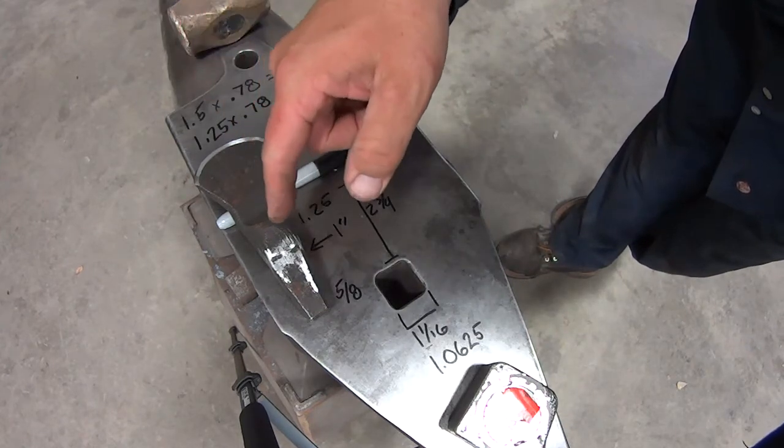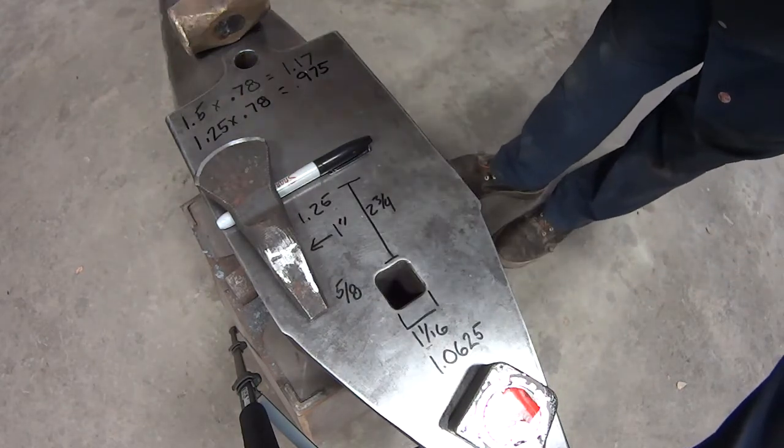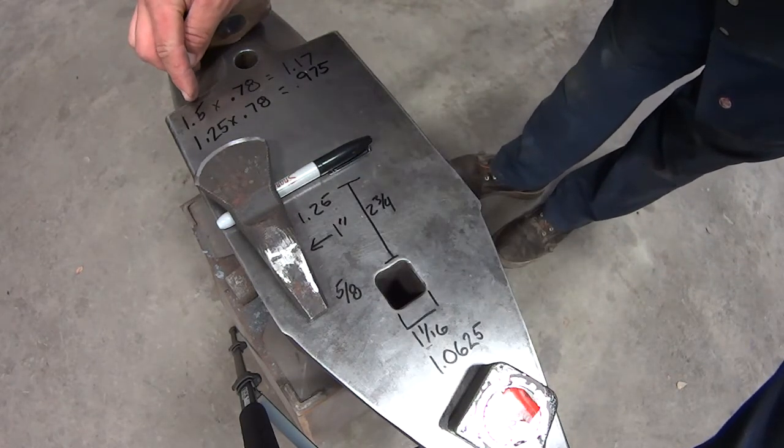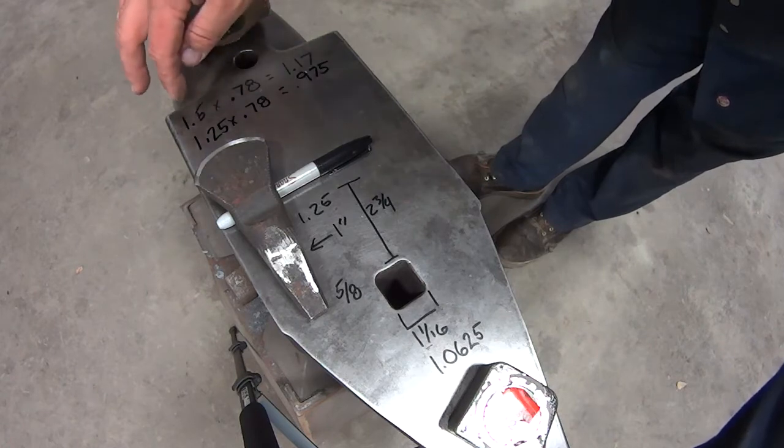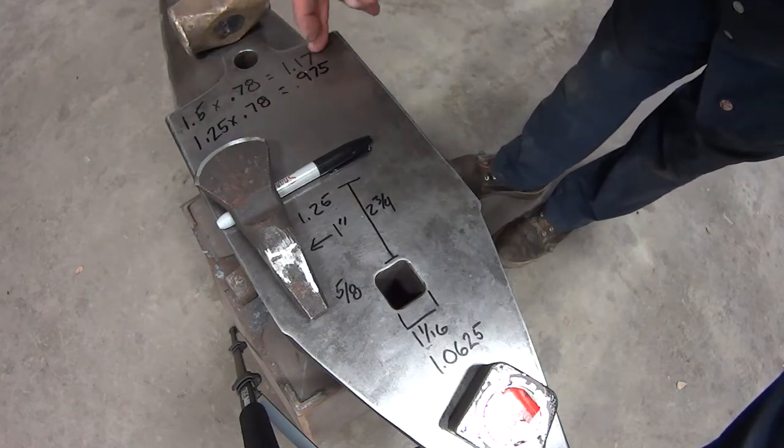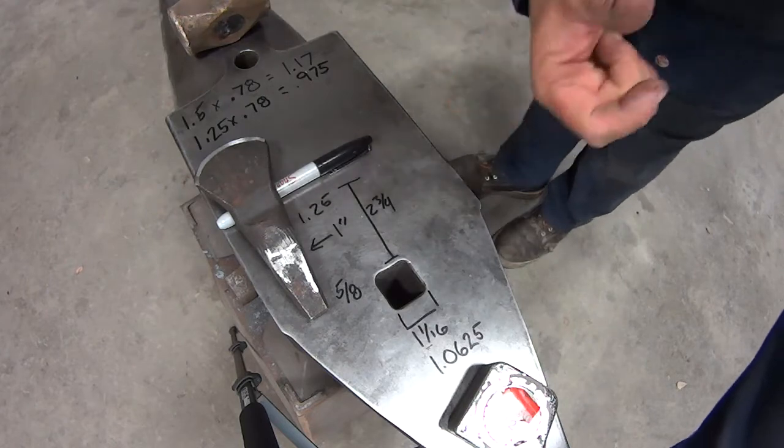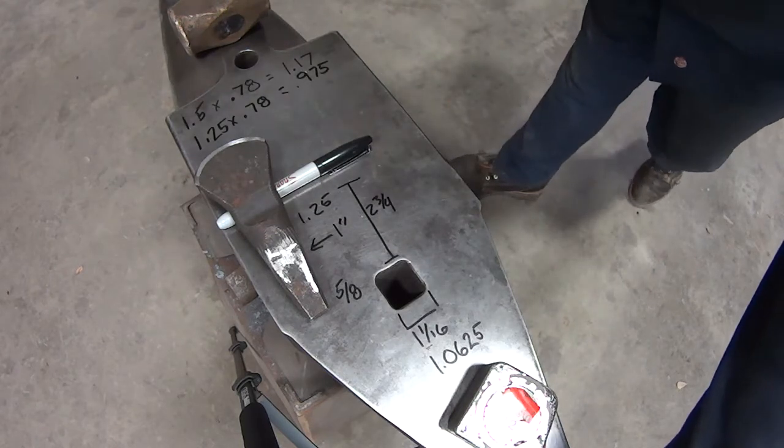So this probably would have been better for those of y'all that are looking for stock. I think it would have been better out of 1.5 inch material because when you go from 1.5 round, multiply it by 0.78, you get almost an inch and a quarter square material. When dealing with one inch hardy holes, that's good.